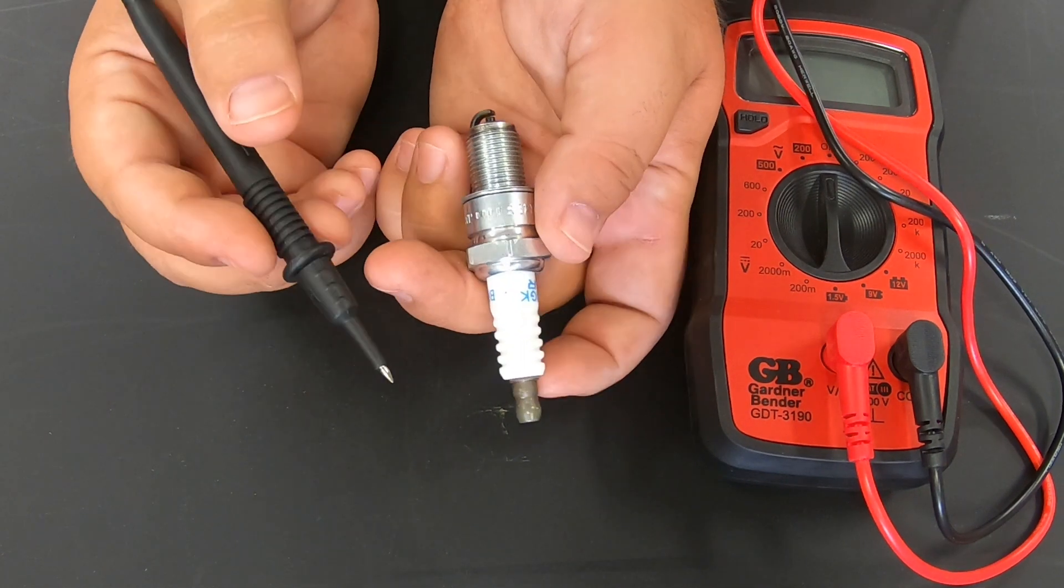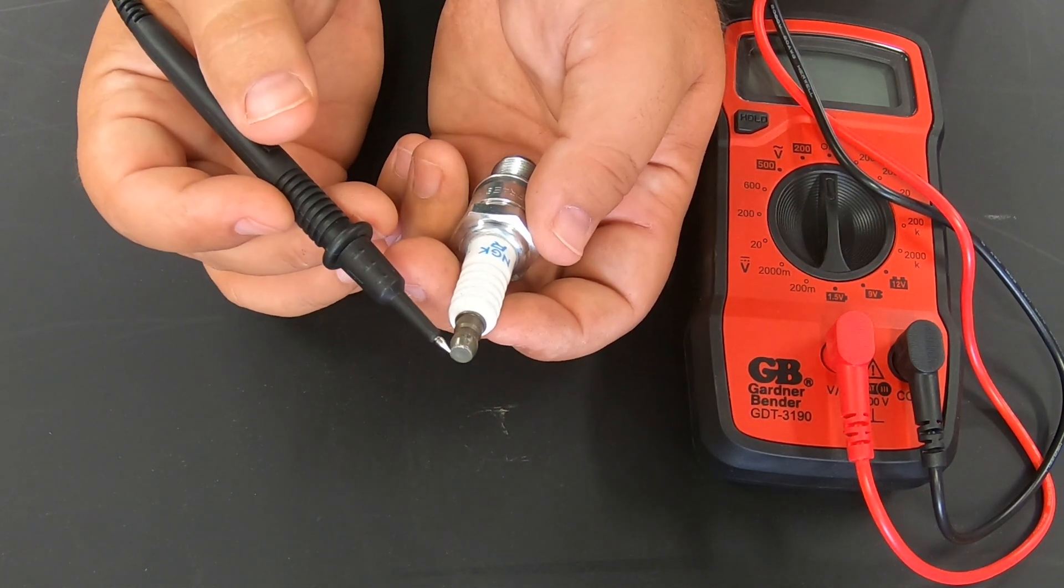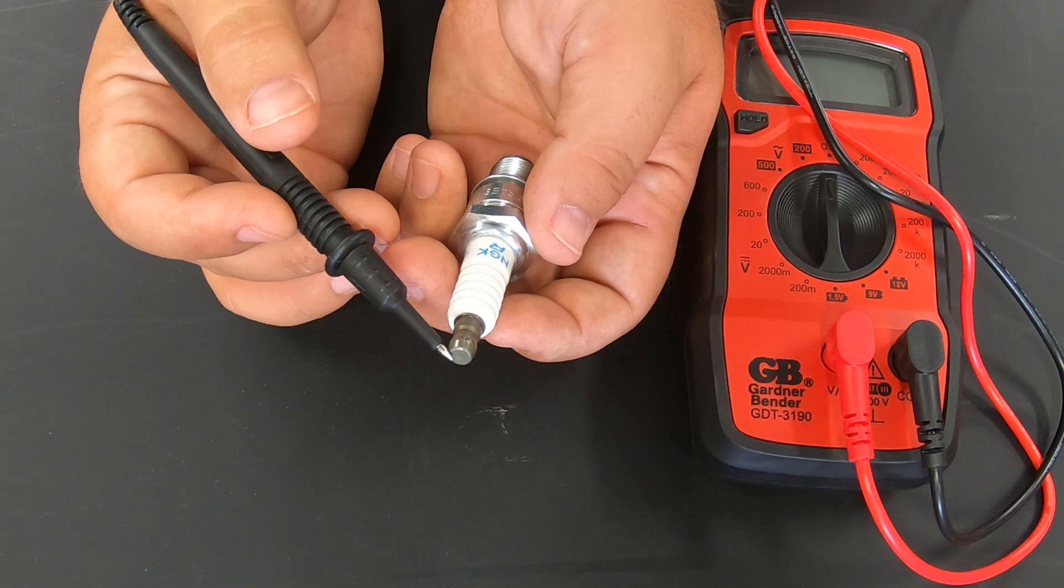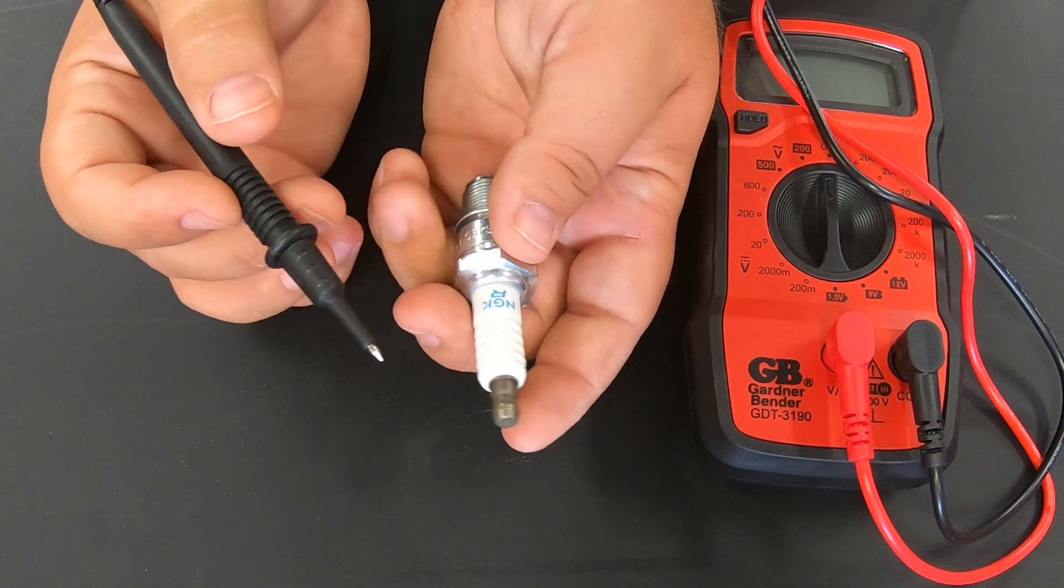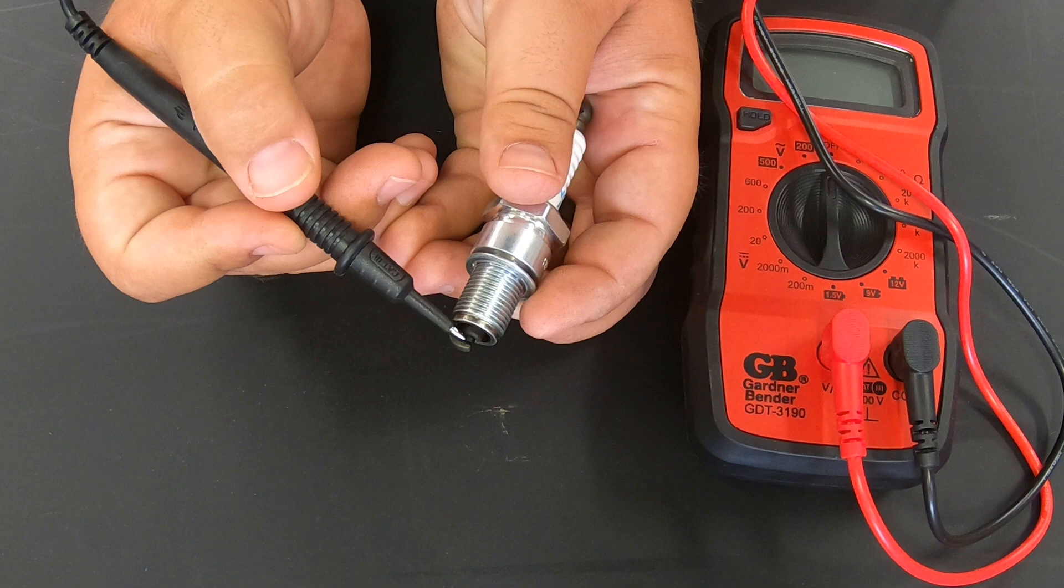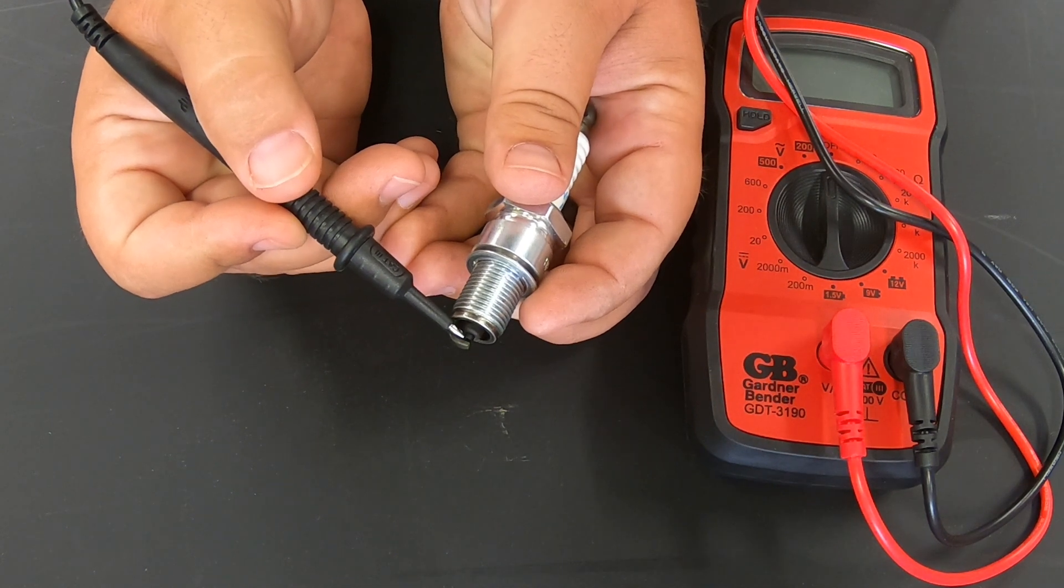So whenever you are checking a spark plug, you are looking for the amount of ohms that are passing through based on this tip and the end of this metal piece here at the electrode.